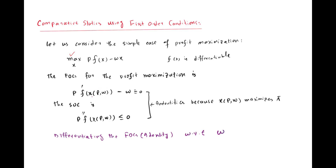The factor demand function shows the optimal factor bundle required to maximize profit. Taking the first order derivative of the profit function and setting it equal to zero gives us: marginal revenue must equal marginal cost. This is the necessary condition for profit maximization. The second order condition requires the second order derivative of the profit function to be less than or equal to zero, ensuring a maximum. This reflects the initial equilibrium of the firm at which profit is maximized.